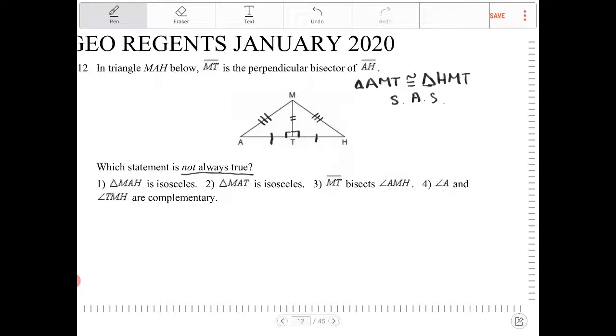So anyway, triangle MAH is isosceles. Is that a true or false statement? That is absolutely true because I've just mentioned and proven to you. Option two: MAT is isosceles. Now, looking at this diagram here, can that be true? It could be true. Does it have to be true? Does it always have to be true? That's not necessarily the case.